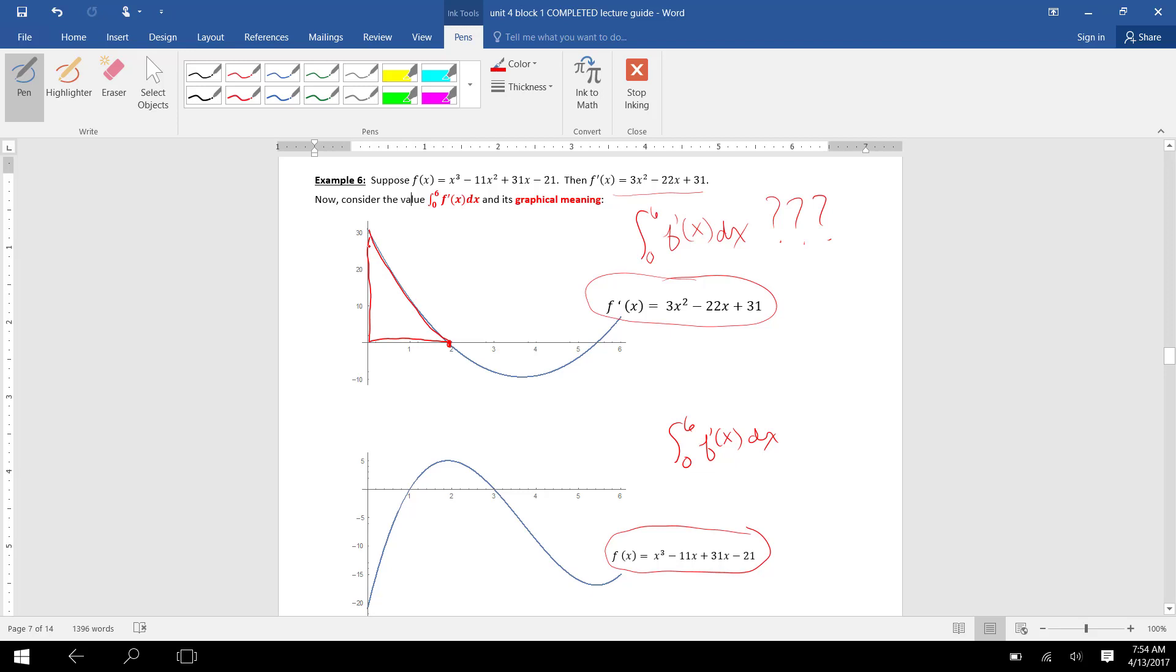So we're going to take this area here, which is close to being a triangle, but it's not exactly a triangle. Plus, we'll add in this area counted negative.